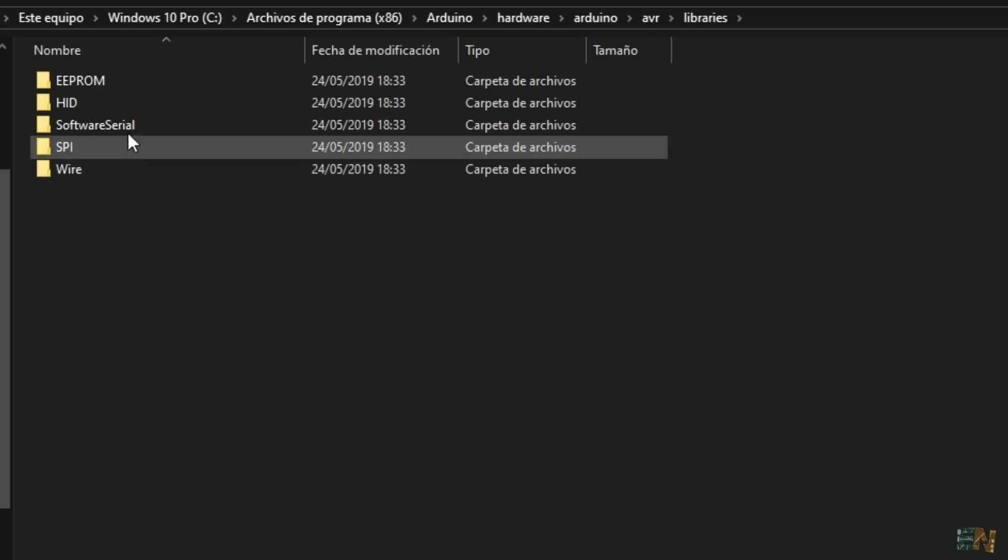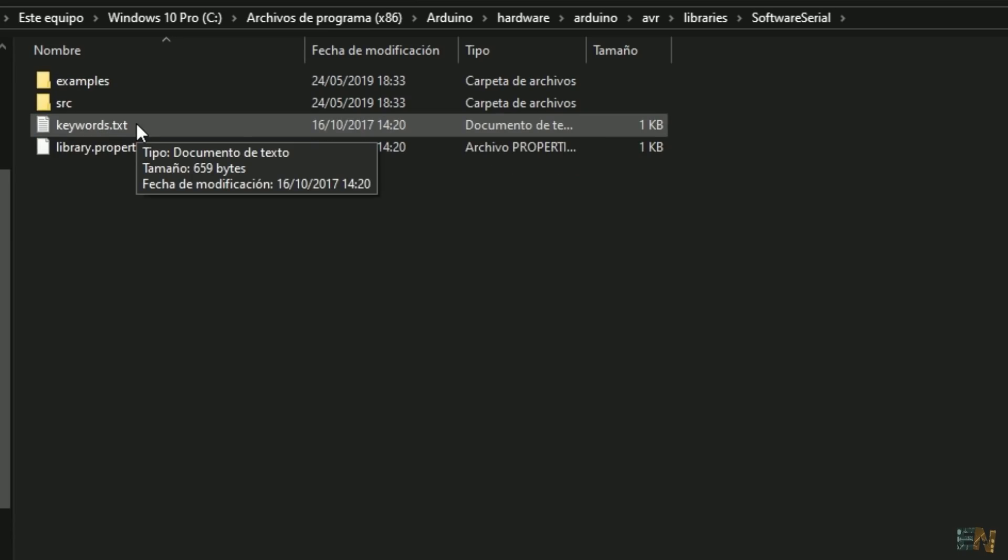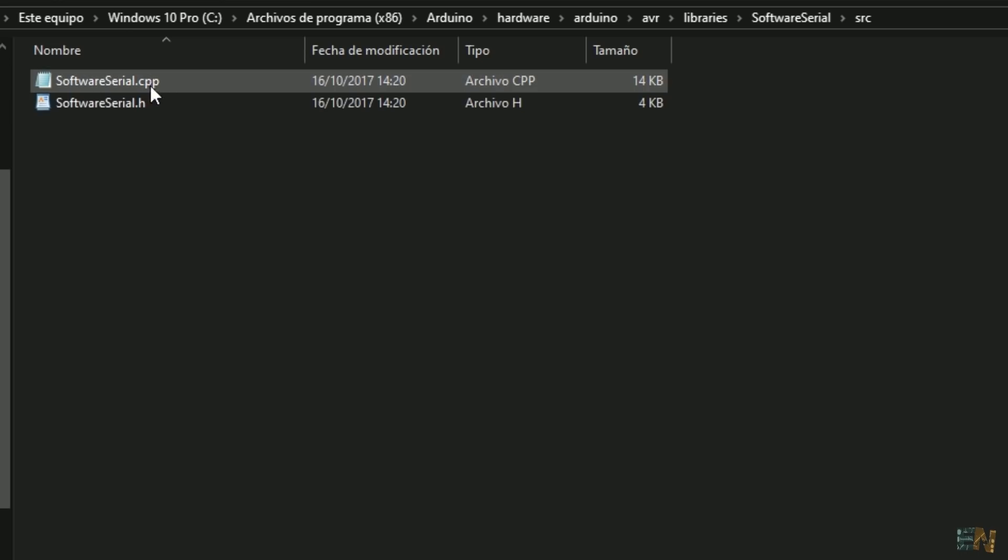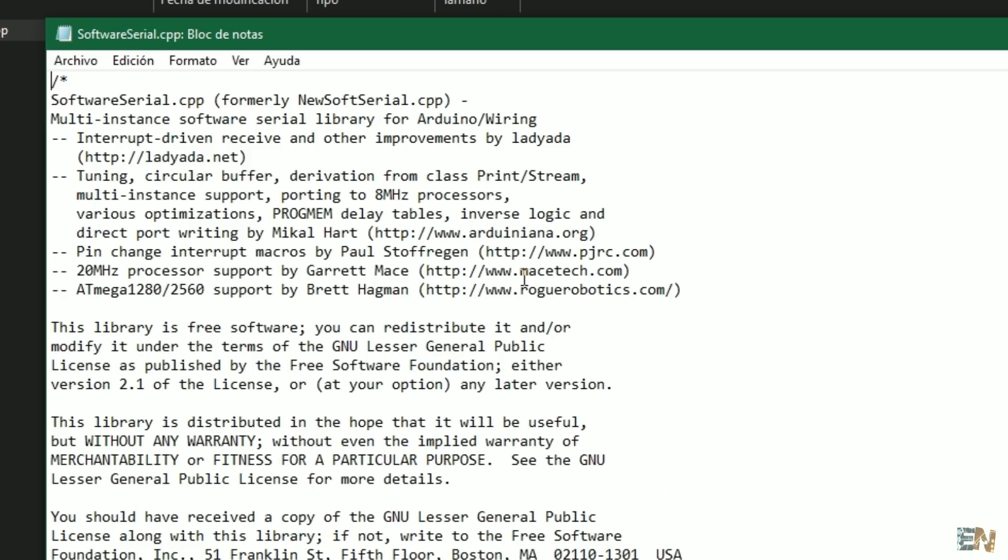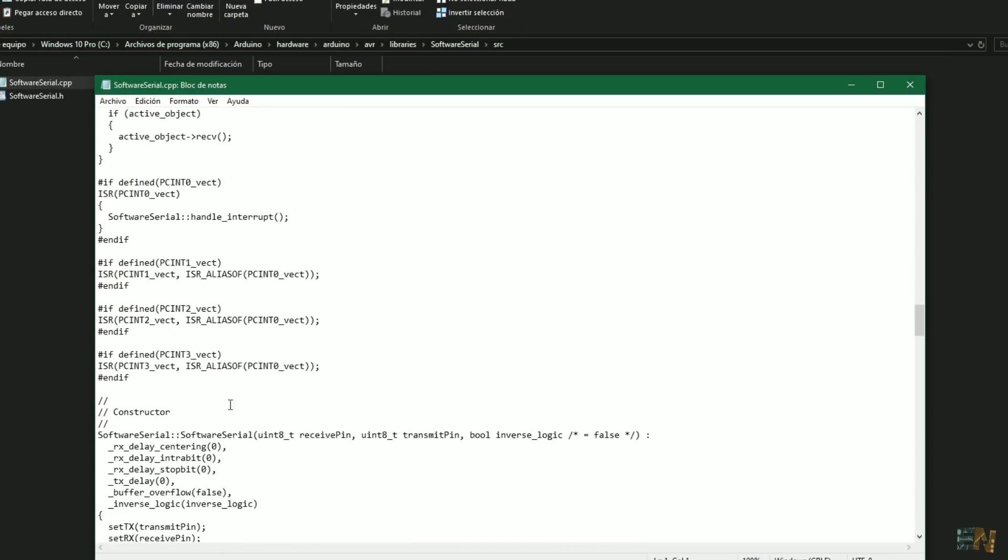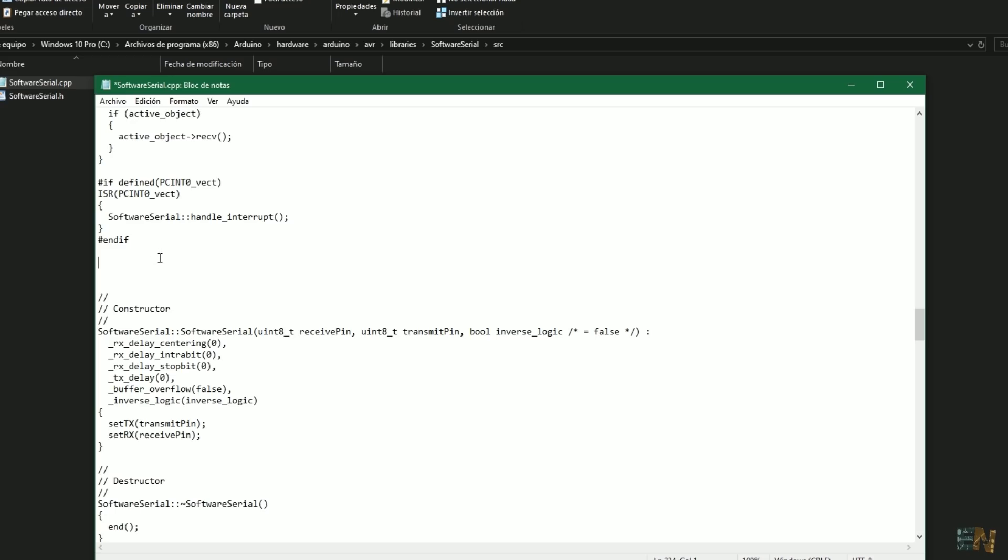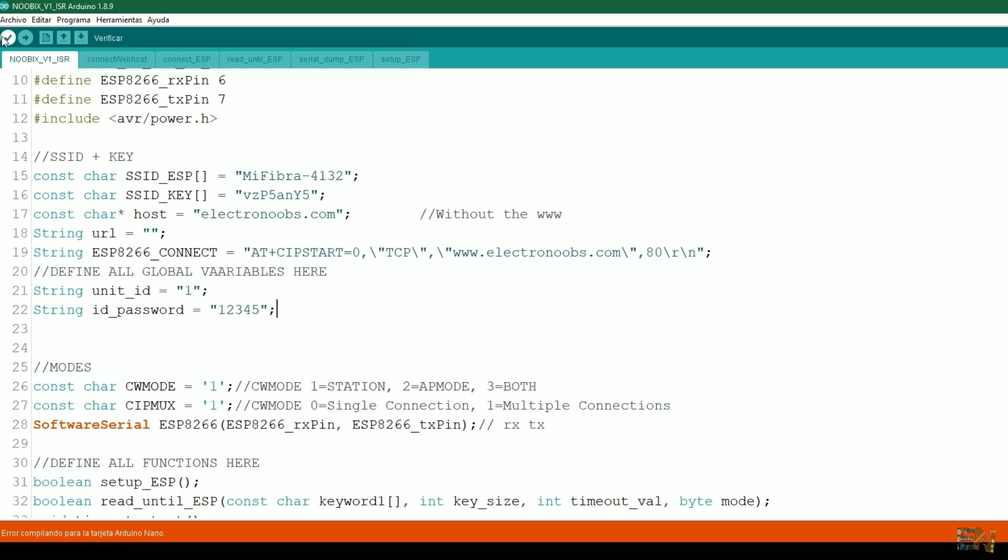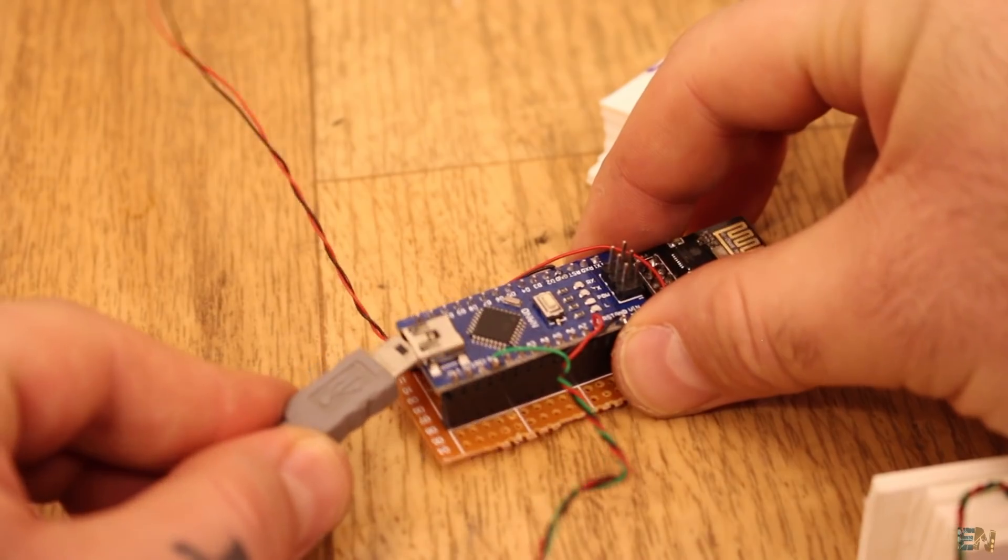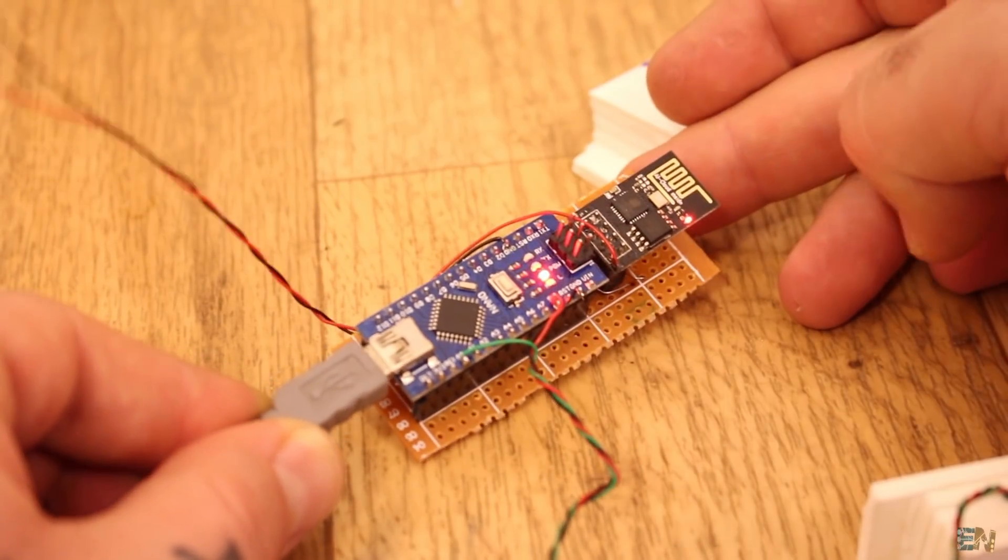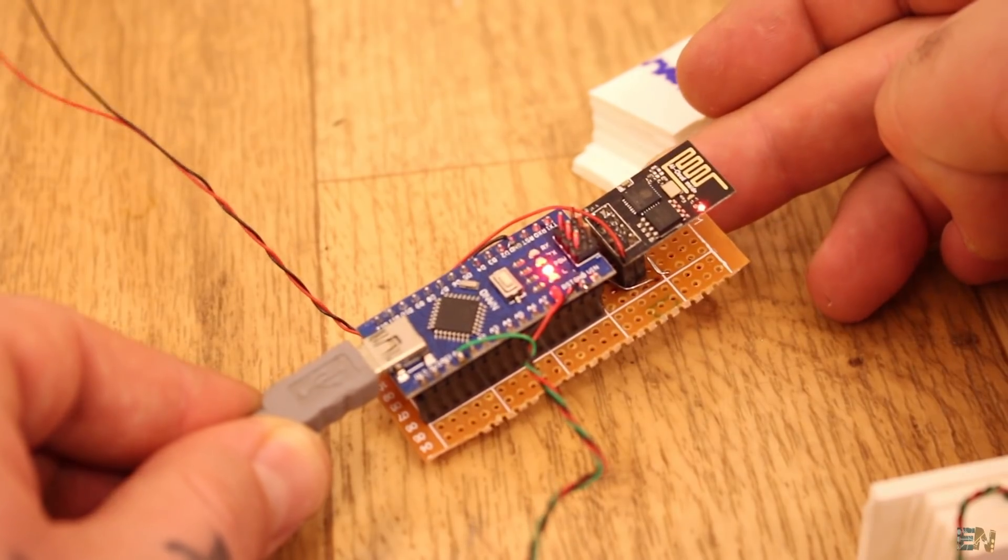Open the software serial.cpp and use administrator rights. Now search and delete these lines here. These vectors are in conflict with the sleep library. Save the file. Compile again and you will see no more errors. Compile and upload it to the Arduino. Read the Arduino code step by step to understand more. But this is what we do.